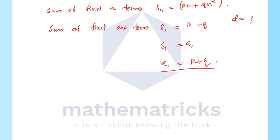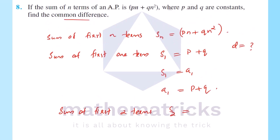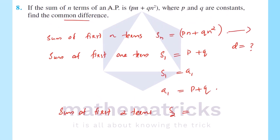The second term a2 is the sum of first two terms minus the sum of first one term. S2 equals 2p plus 2 squared into q, that is 2p plus 4q.